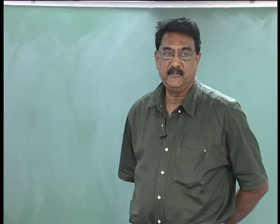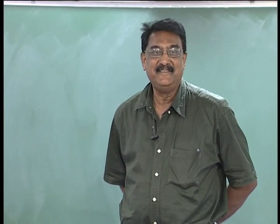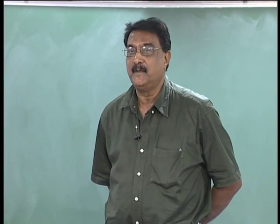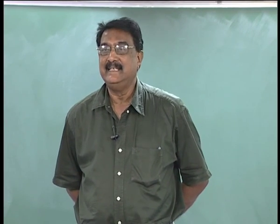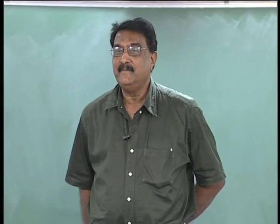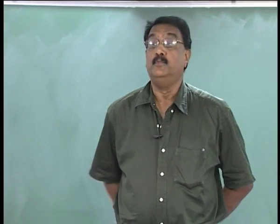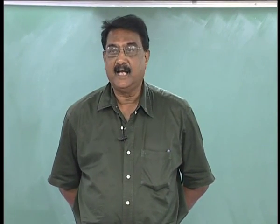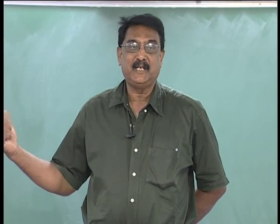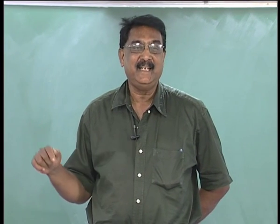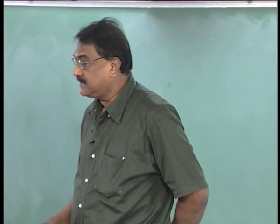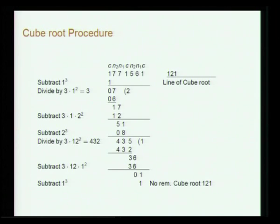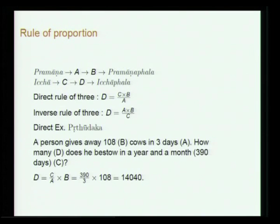If you have perfect cubes, it is simple. But if you do not have perfect cubes, implicit in later texts is that you multiply by powers of 10 cubed — like 1000 or 1000² — and then the cube root is correspondingly divided by 10 or 10² and so on. That is what some of the later texts discuss.